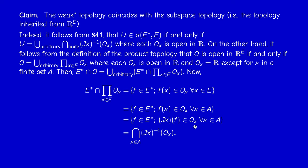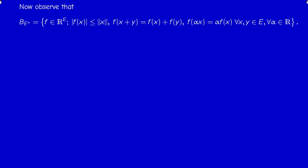Now we prove that the closed unit ball of E* is compact in the bigger space R^E. We write B(E*) as the set of elements in R^E that are linear — satisfying F(x+y) = F(x) + F(y) and homogeneity — and bounded, with norm at most one. This is equivalent to saying an element is in the closed unit ball if and only if it is linear and satisfies |F(x)| ≤ ‖x‖.